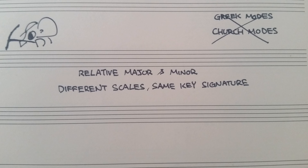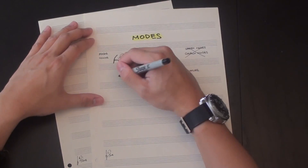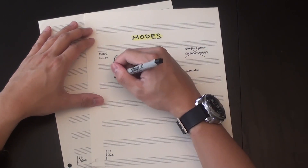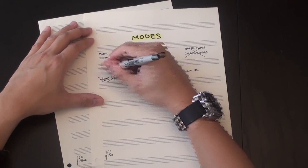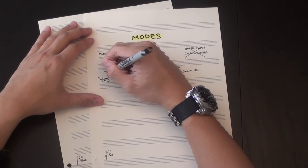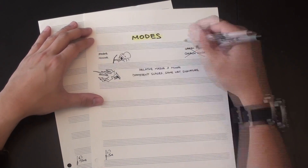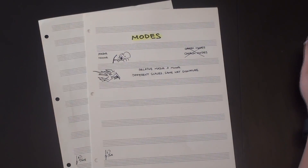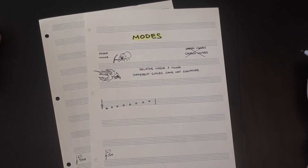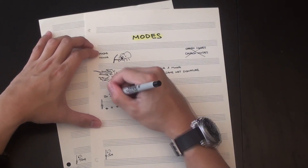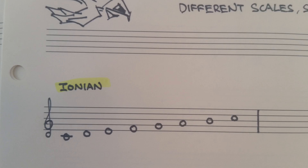Each mode shares all the same notes with a relative major, but with a different tonic. Modes can also be thought of as white key scales, as they're the only seven-note scales that can be played entirely on the white keys of a piano with no accidentals, since each of them shares a key signature with C major. So let's start there. Major is identical to the first mode, Ionian — it's just a different name for the same scale.